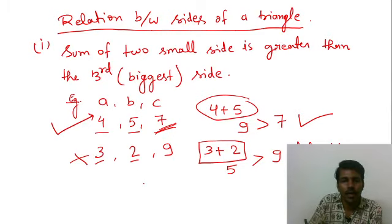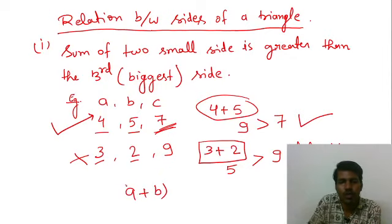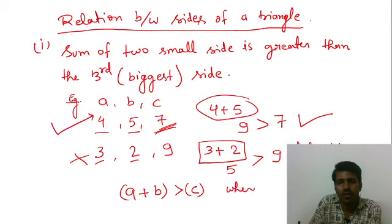त्रिभुज की भुजाओं में एक relation त्रिभुज को बनाने के लिए क्या होता है? ABC के terms में देखें? A plus B has to be greater than the third side, where C is the biggest side. Got it? Moving further.